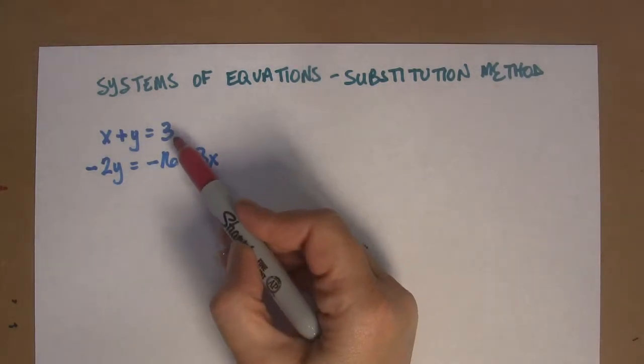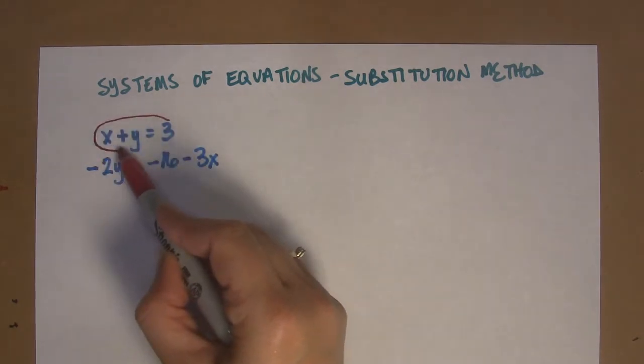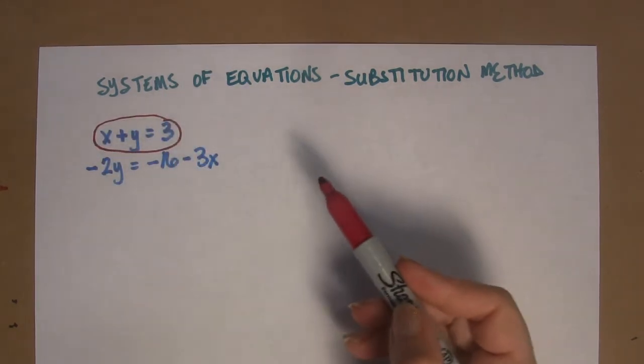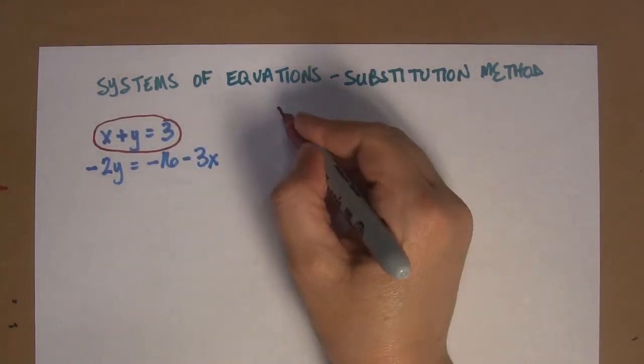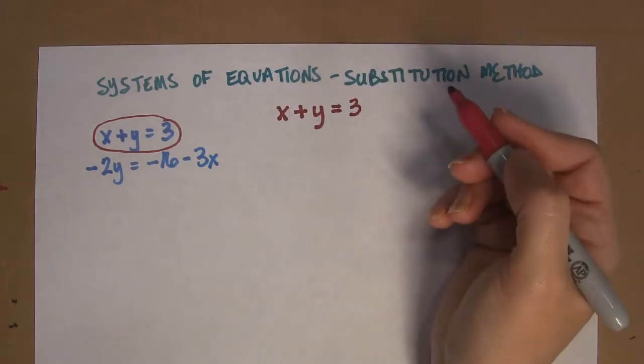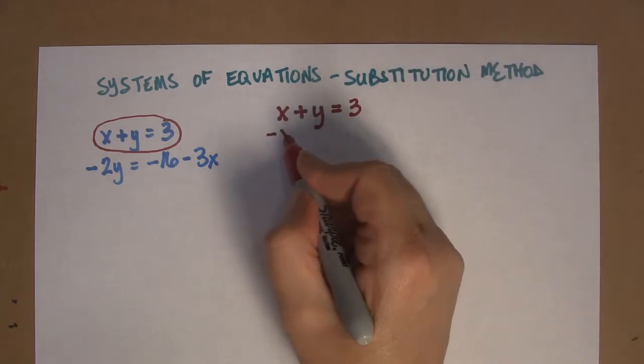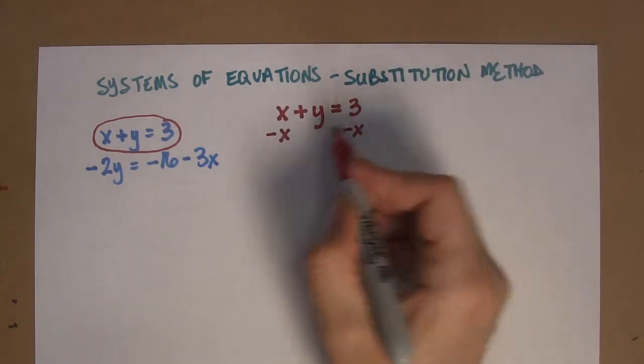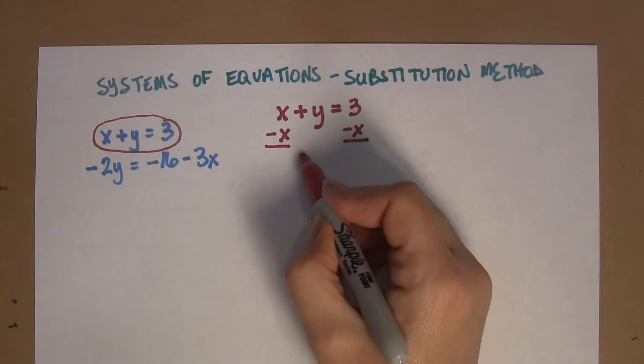And the reason I'm picking this other way is because I'm looking at this equation right here, and that equation just looks so nice and simple, doesn't it? x plus y equals 3. I could very easily get either the x or the y by itself.